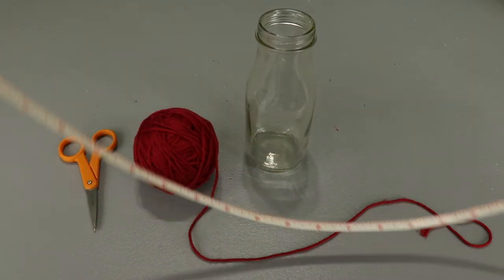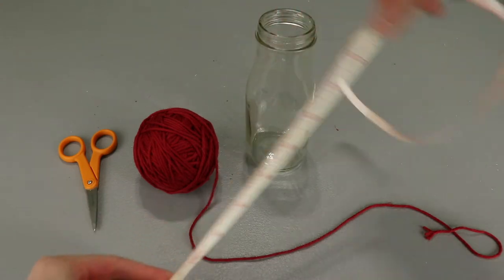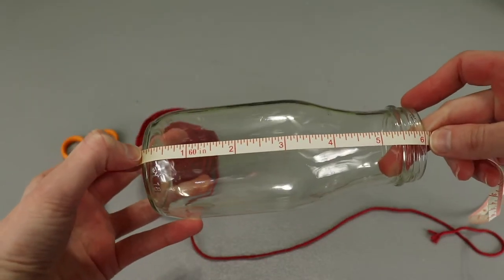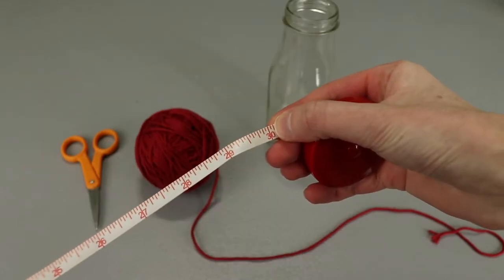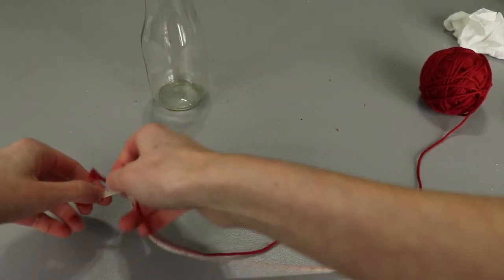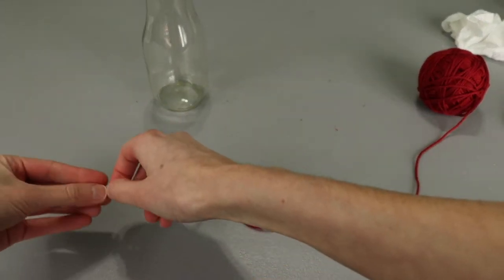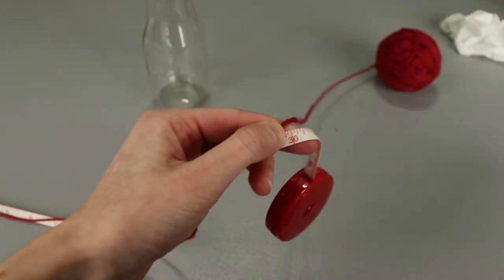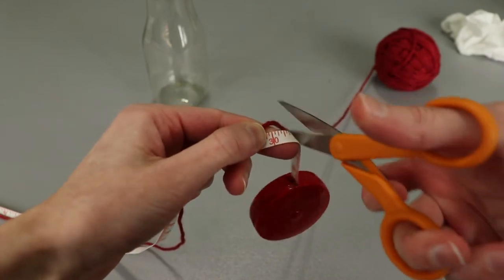But now that we have our materials, it's time to cut the yarn and start tying. My jar is about six inches tall, so I'm going to cut pieces five times that length, or 30 inches long. How much extra length you need depends on the size, the scale, and number of knots in your project, but for a jar this size and the amount of knots we're going to do, a multiplier of five should work great.